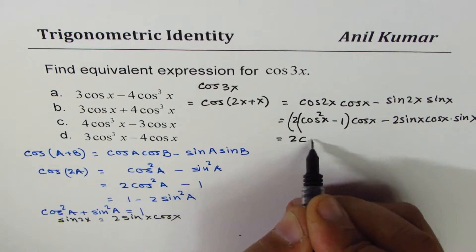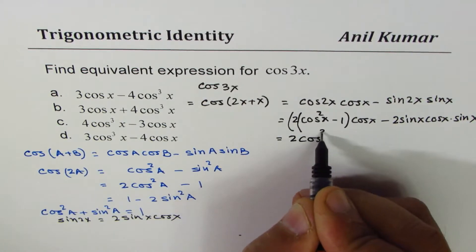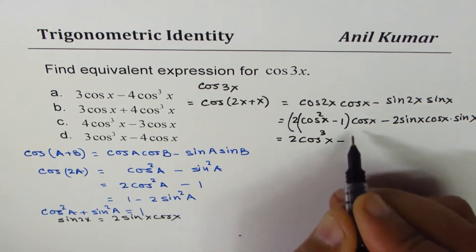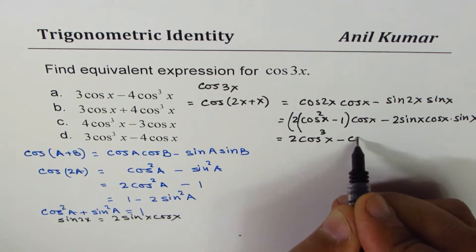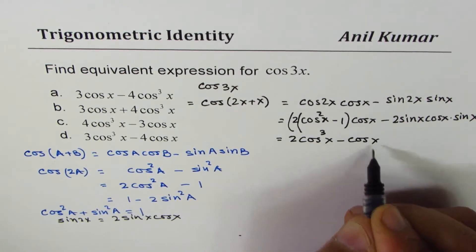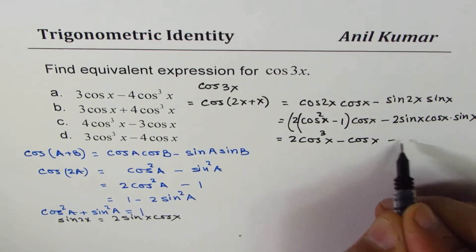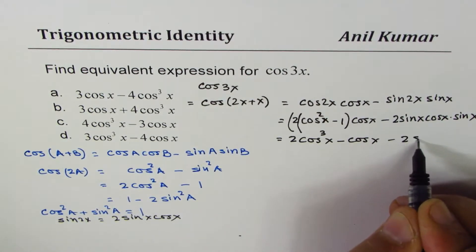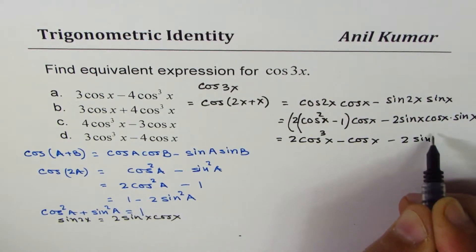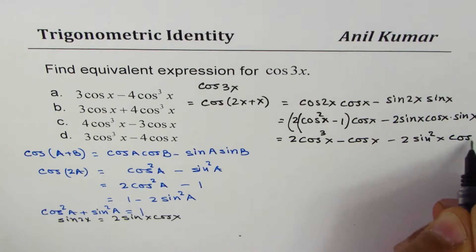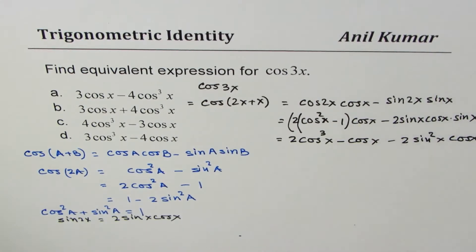Expanding, 2 cos² x − 1 times cos x gives us 2 cos³ x − cos x, and we subtract 2 sin² x cos x.